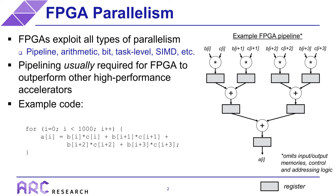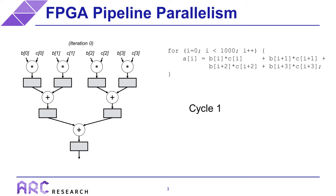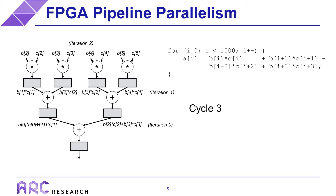Now we're going to take a look at what happens at runtime with this pipeline, ignoring where the inputs come from and where the outputs go to in order to keep things simple. In cycle one, the FPGA multiplies the input pairs from iteration zero of the loop, which is B0 through B3 and C0 through C3. In cycle two, the products from iteration zero move down one stage in the pipeline, and the input pairs for iteration one are multiplied in the first stage. In cycle three, the data from iteration zero and one both move down a stage, and the input pairs for iteration two get multiplied.